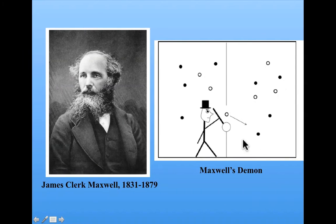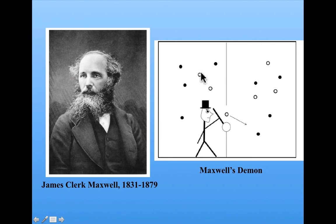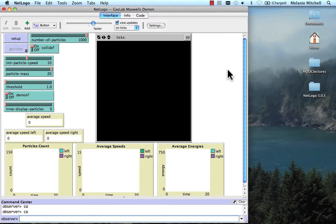After some time, there'll be many more fast molecules on the right side and slow molecules on the left side. The system will be more ordered because he sorted the slow molecules from the fast molecules, and this means that the overall entropy of the system will be decreased. Here's a NetLogo model of Maxwell's Demon, also from the NetLogo models library. It's from the Gas Lab section, and it's called Gas Lab Maxwell's Demon.